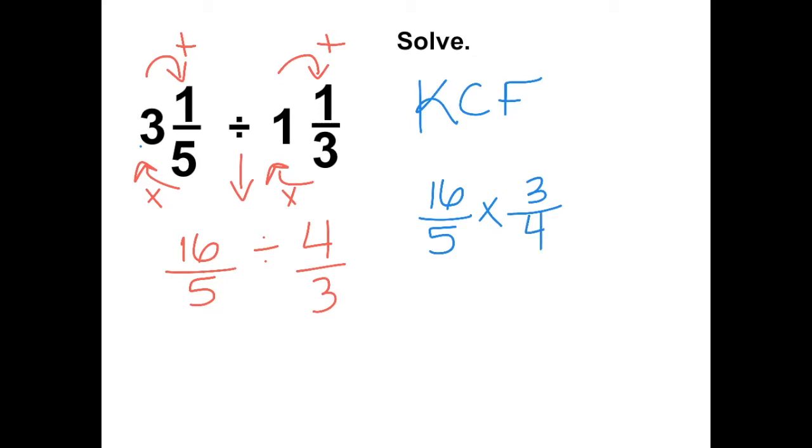Now we can check if we can cross-simplify. 4 and 16 can both be divided by 4. This becomes a 4. This becomes a 1.